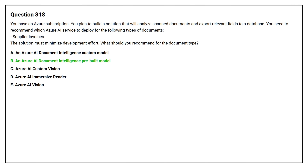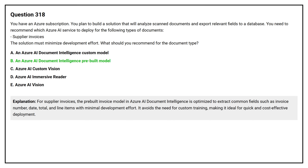The correct answer is Option B: An Azure AI Document Intelligence pre-built model. The pre-built invoice model in Azure AI Document Intelligence is optimized to extract common fields such as invoice number, date, total, and line items with minimal development effort. It avoids the need for custom training, making it ideal for quick and cost-effective deployment.